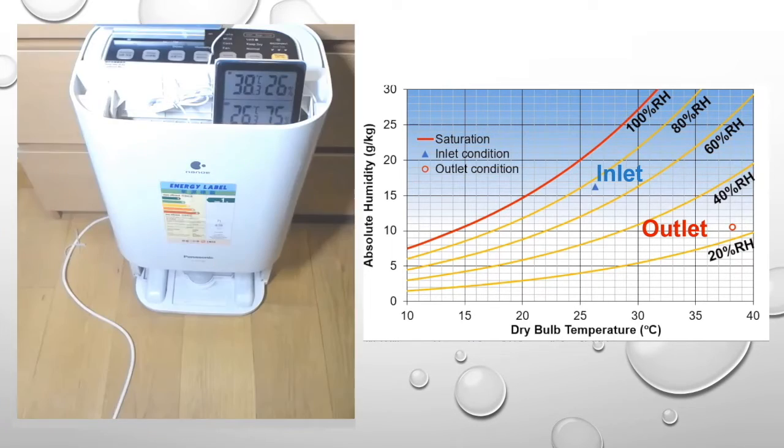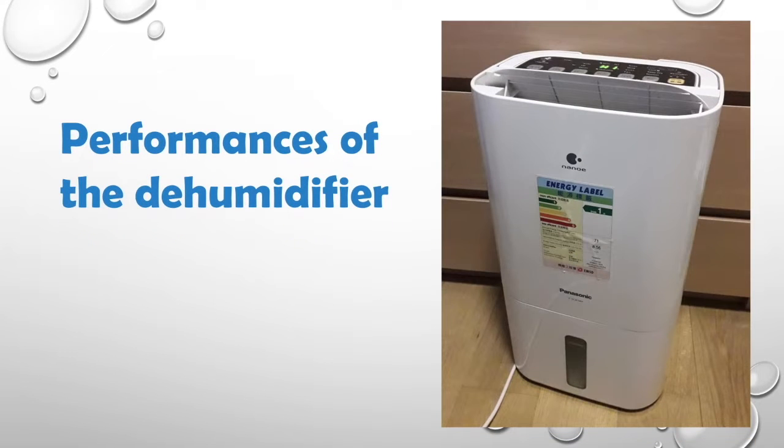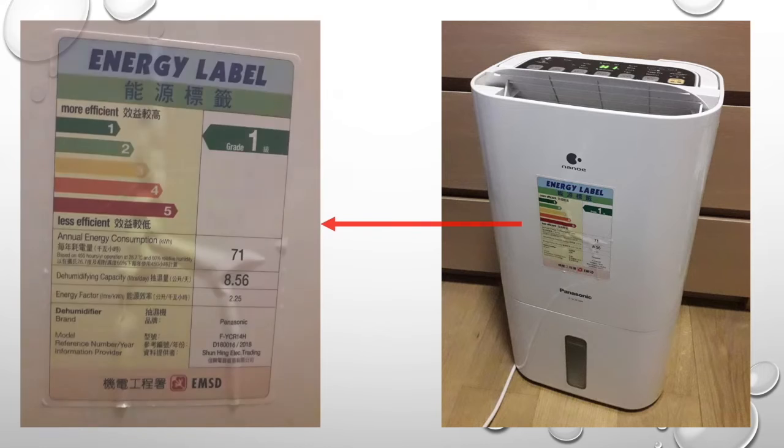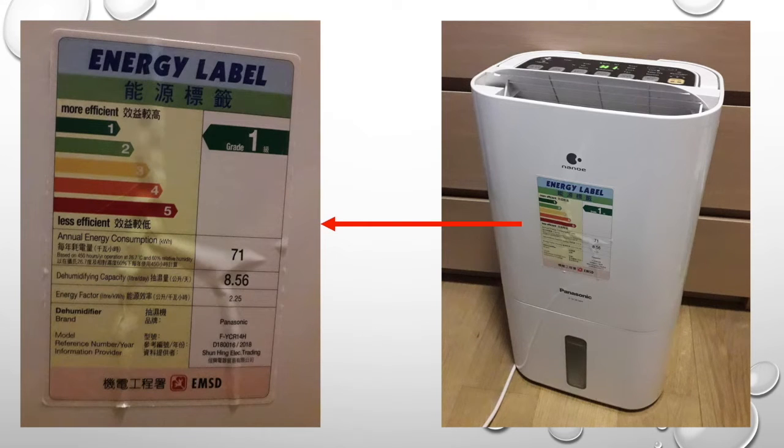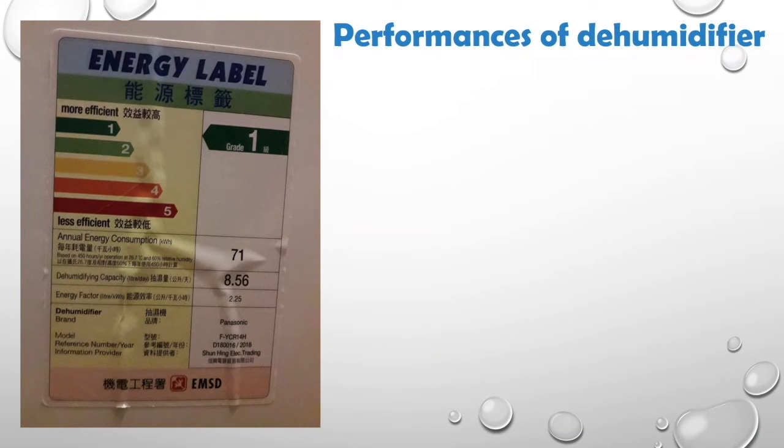So you may ask, how well does the dehumidifier work? If we look at the front of the dehumidifier, we will notice that there is an energy label there. There are three parameters that tell us the performances of the dehumidifier.